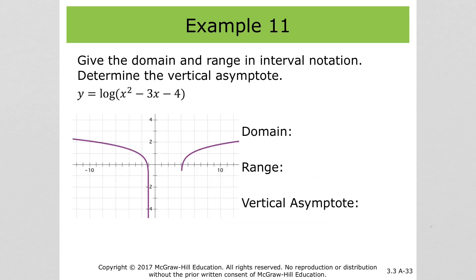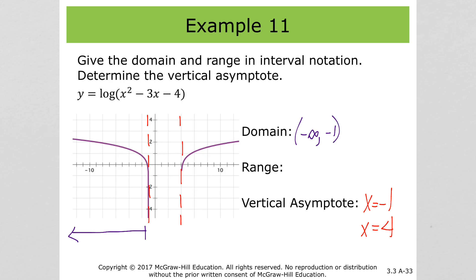For this one, we've got vertical asymptotes in two spots: one at x equals negative 1 and another at x equals 4. Our domain is negative infinity to negative 1, unioned with starting back at 4 going to infinity. And then the range is negative infinity to infinity — it's going down forever and up forever.